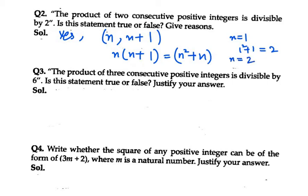If I take n equals 2, it will be 2² + 2 = 4 + 2 = 6. Again, 6 is divisible by 2.